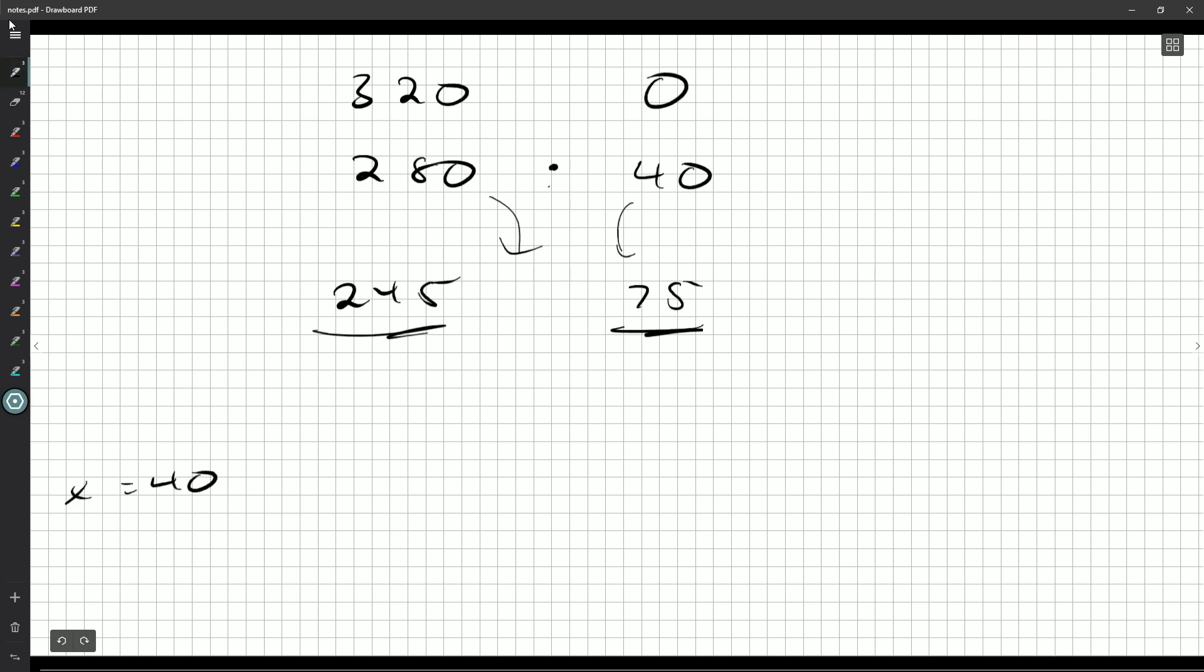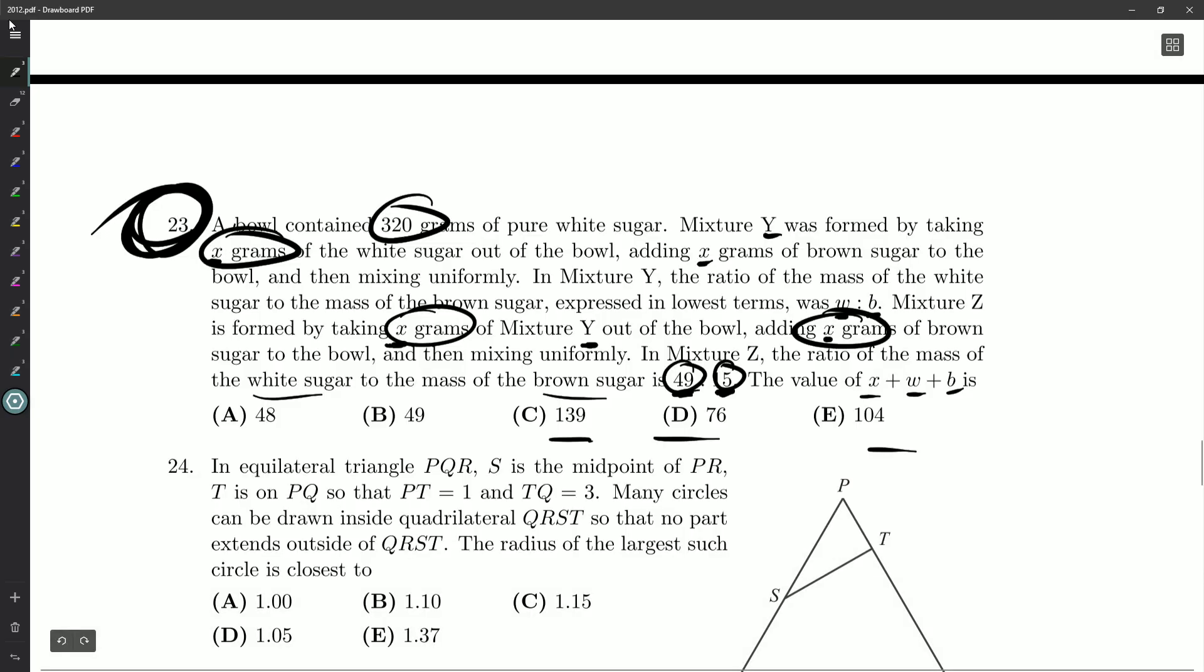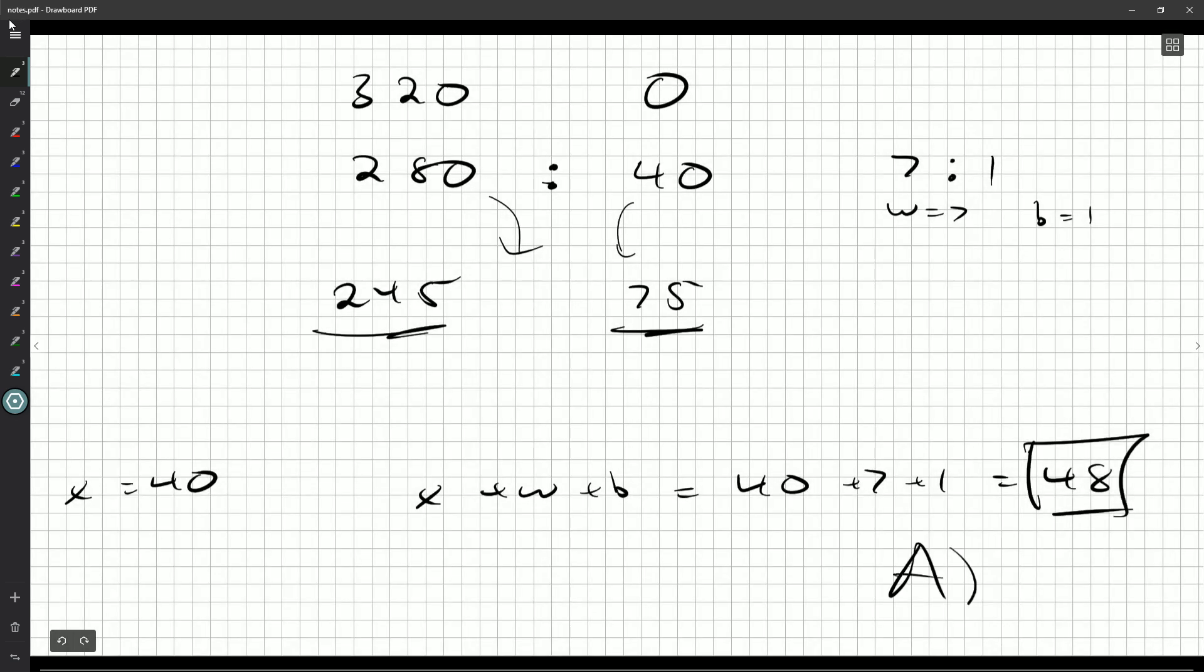Alright, so X is 40. Now, W to B is 280 to 40. You can divide by 40 on both sides. You'll get 7 to 1. So W is 7, B is 1. So X plus W plus B is going to be 40 plus 7 plus 1, 48. So, that should be our answer. 48 is right there. It's the smallest value we could have. Not that that really impacted anything. And we get our answer of A. And there we go.